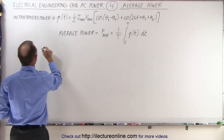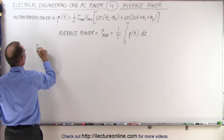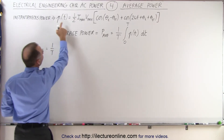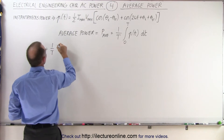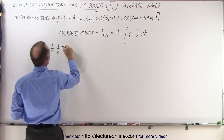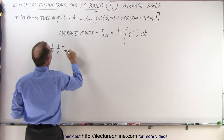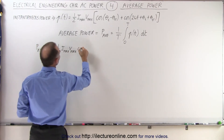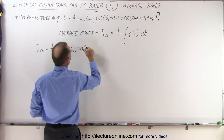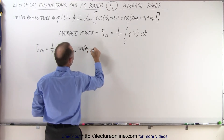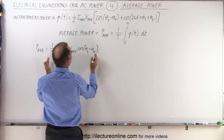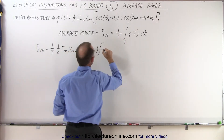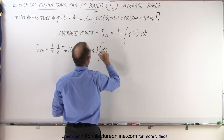So this becomes: average power equals 1 over the period times the quantity ½ i_max v_max times the cosine of the difference between the two phase angles (θ_i minus θ_v). This entire constant is then multiplied by the integral of the remaining dt from 0 to t.